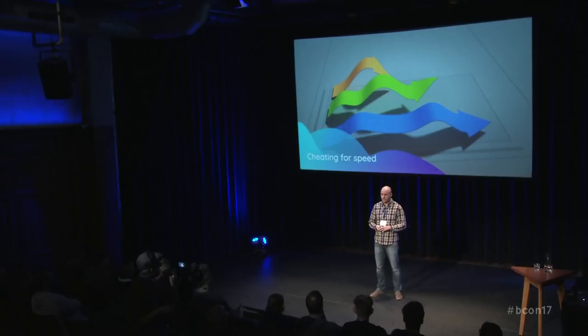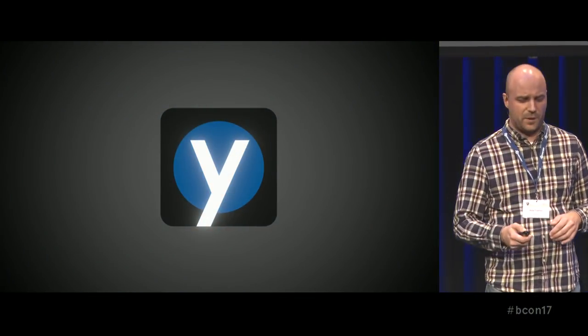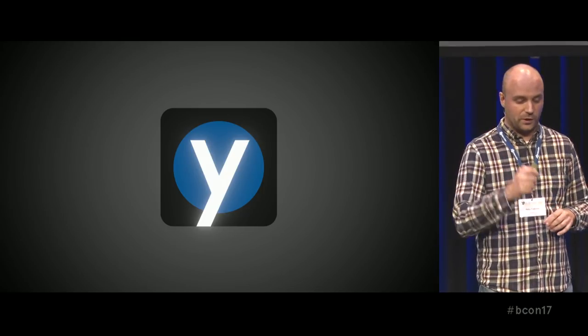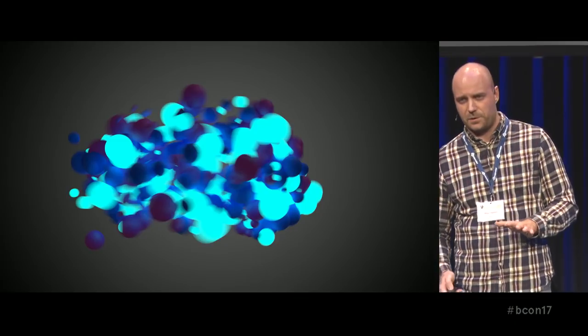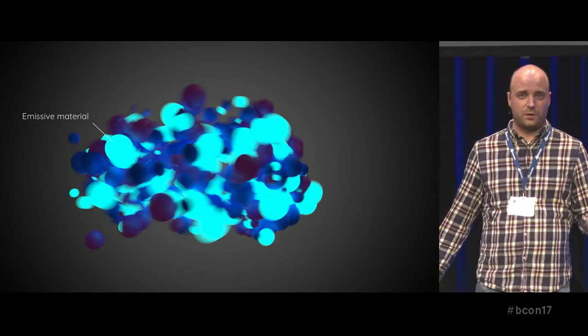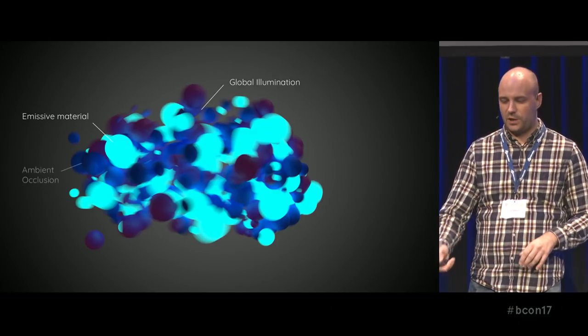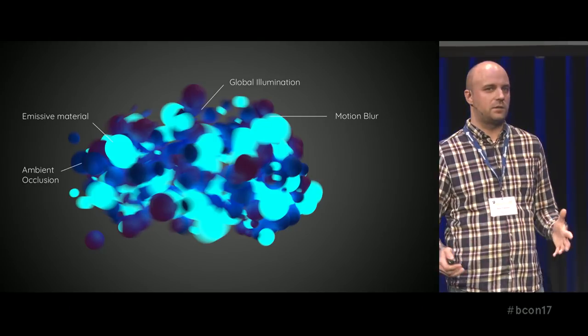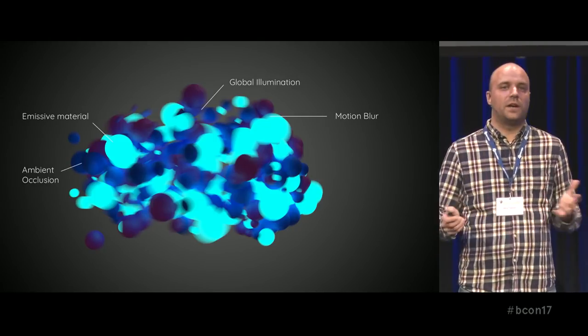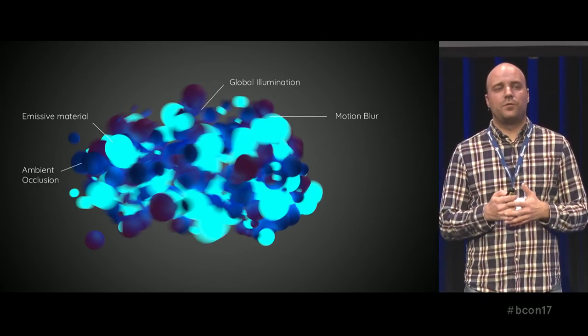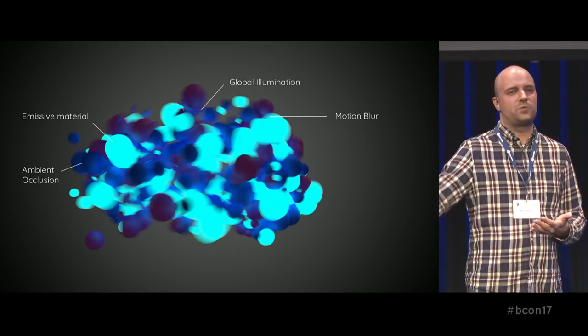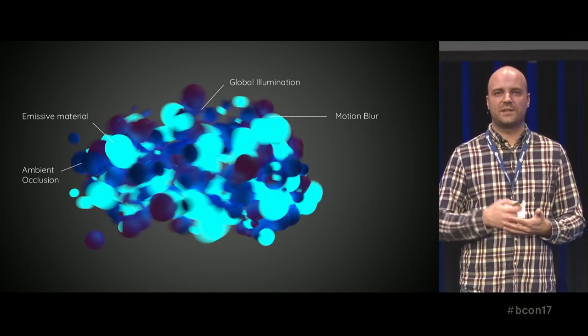So we don't render in Cycles — we render in Blender Internal, I know, shocking. But we don't have to render it completely. This is a Cycles animation: some spheres go around a logo and it appears. This is the busiest frame — there's emissive material illuminating the whole scene with global illumination, ambient occlusion, and high-quality motion blur, all Cycles. The trick is to figure out what will change between renders — we only need to render the things that change, which is the logo and color.